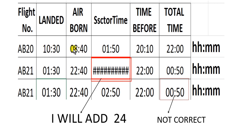Now here are other examples. The airborne and landed are on the same day, but this example has different days — this is before midnight and this is the new day after midnight. When I want to calculate this cell minus this cell, the answer is incorrect — impossible. The total time is also wrong.